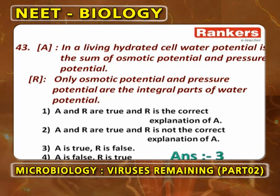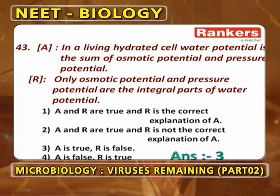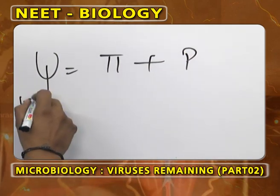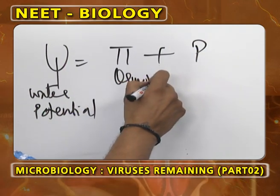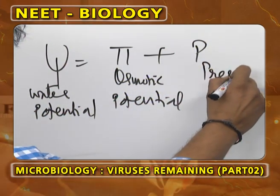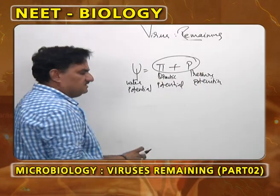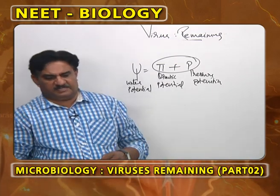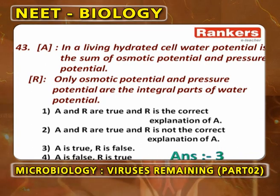Assertion-reasoning question: In a living hydrated cell, water potential is the sum of osmotic potential and pressure potential — that is, psi = pi + P. Pi is osmotic potential, P is pressure potential. The sum of osmotic potential and pressure potential equals water potential. So the assertion is correct.